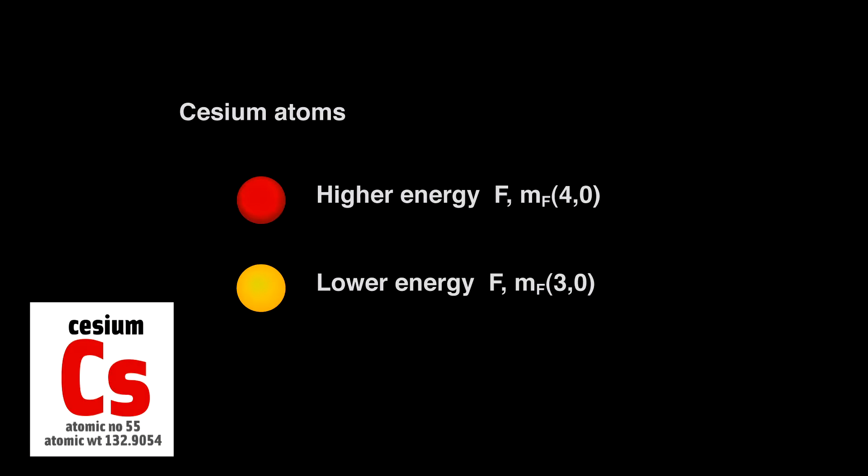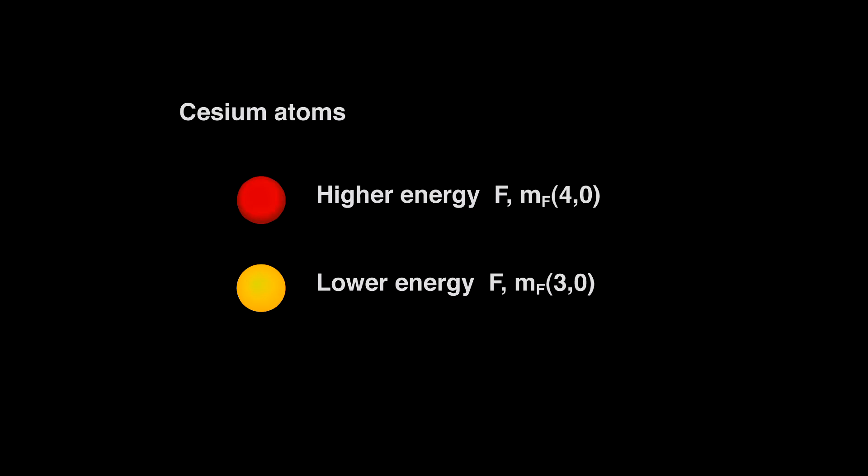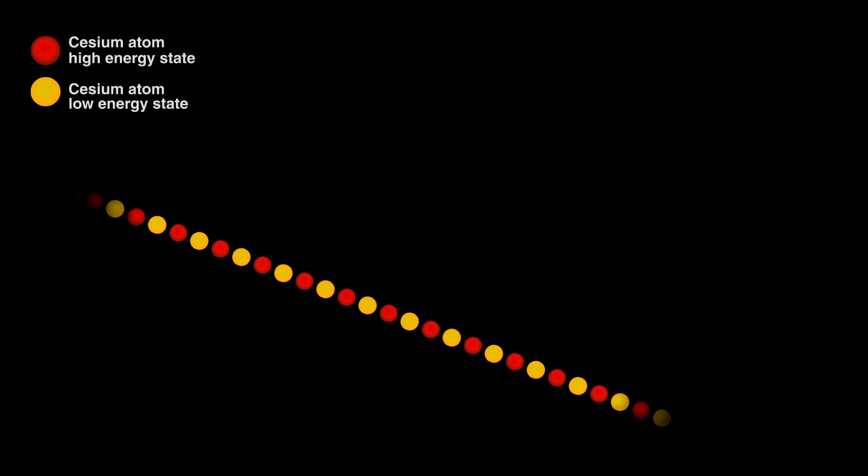The atoms in pure cesium exist mostly in two slightly different forms, a low energy form and one with just a bit more energy. For an atomic clock, these two states have two properties critical to making a clock.